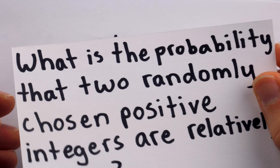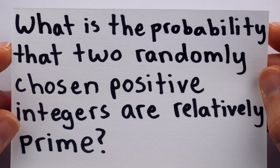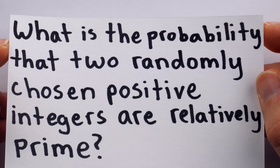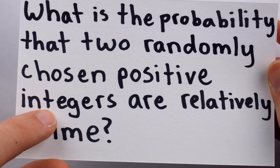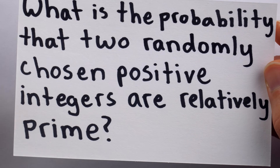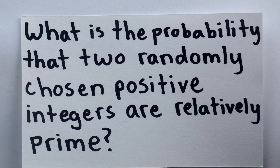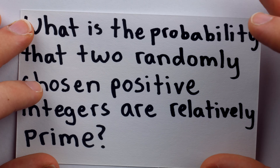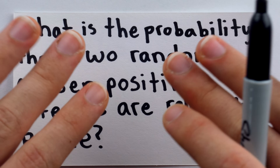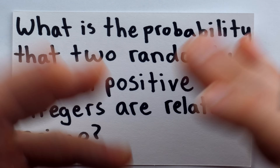So again, the question is: what's the probability that two randomly chosen positive integers are relatively prime? This is pretty difficult when you think about it, because there are infinitely many positive integers we could choose, and since we don't know how big they are, there are infinitely many potential factors they could have. So where do we even begin? We need to start with some basic tools of probability.